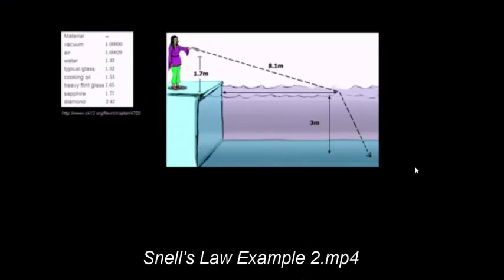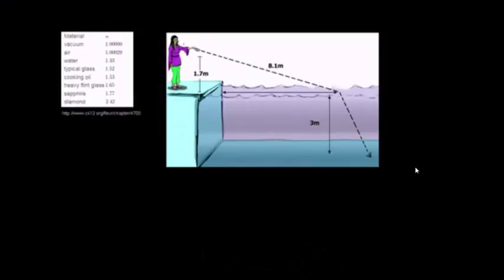Let's do a slightly more involved Snell's Law example. So I have this person sitting at the edge of this pool, and they have a laser pointer in their hand. They shine their laser pointer 1.7 meters above the surface of the pool, and it travels 8.1 meters to touch the surface of the water. The light gets refracted inward, going to a slower medium.